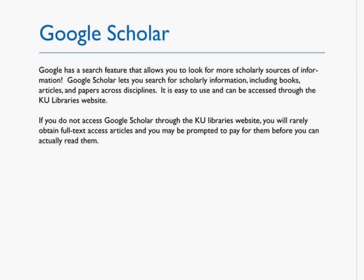Google has a search feature that allows you to look for more scholarly sources of information. Google Scholar lets you search for scholarly information including books, articles, and papers across disciplines.